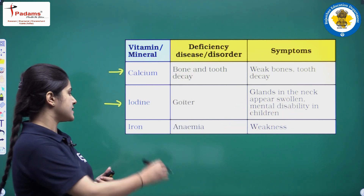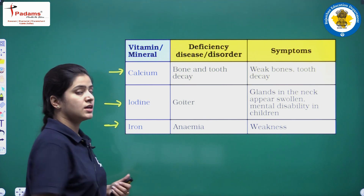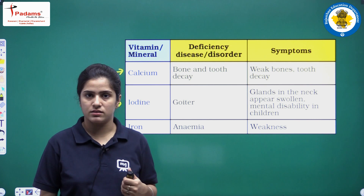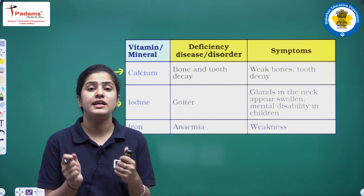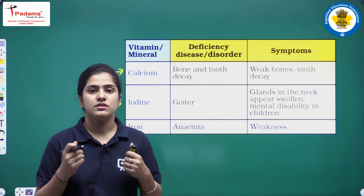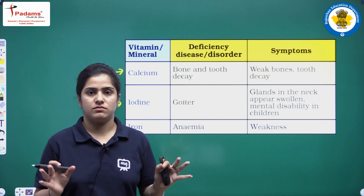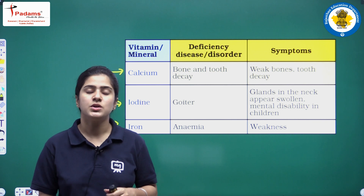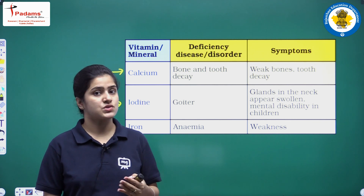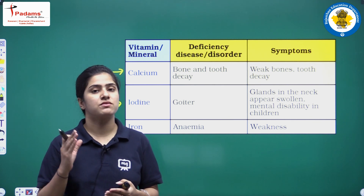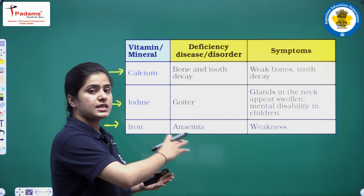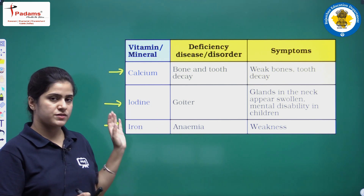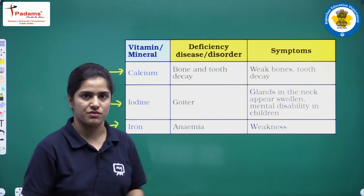Now we discuss iron deficiency. Because of iron deficiency, anemia will occur, and due to anemia you will feel weak — it weakens the body. So we have discussed the balanced diet, deficiency diseases, the diseases caused by deficiency of certain nutrients, and their symptoms.